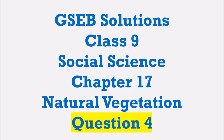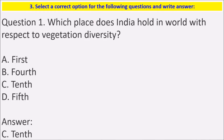Let's see Question 4. Select the correct option from the following questions and write the answer. Which place does India hold in the world with respect to vegetation diversity? India holds the 10th place in the world with respect to vegetation diversity.